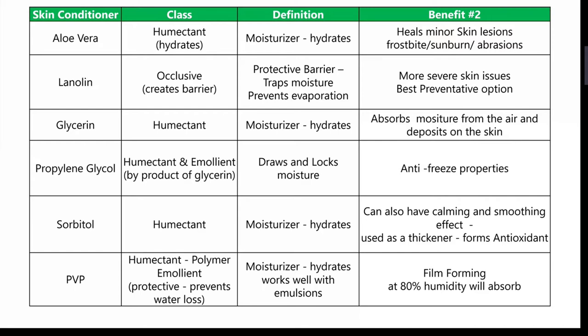One of the really positive things about sorbitol is that through the science itself, it forms an antioxidant. And lastly, we have PVP, which is a polymer and again a humectant. It works the same way to moisturize and hydrate, and it also works well with other emulsions. It protects and prevents water loss. A really good point is film forming — at 80% humidity it will absorb.